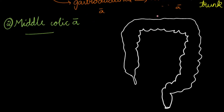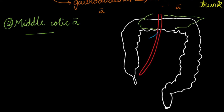Now let's see the middle colic artery. This artery arises from the right side of the superior mesenteric artery, below the body of the pancreas, and it divides into a left branch and a right branch. The left branch anastomoses with the left colic artery, which arises from the inferior mesenteric artery — we will discuss the inferior mesenteric artery in the next video.